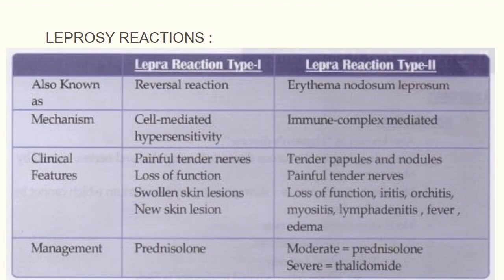Type 1 lepra reaction, also known as reversal reaction, occurs in tuberculoid leprosy. It involves hypersensitivity and increased cell-mediated immunity. The patient may have painful tender nerves, loss of function, swollen skin lesions, and new skin lesions may also appear. Its management involves prednisolone, which is a steroid.